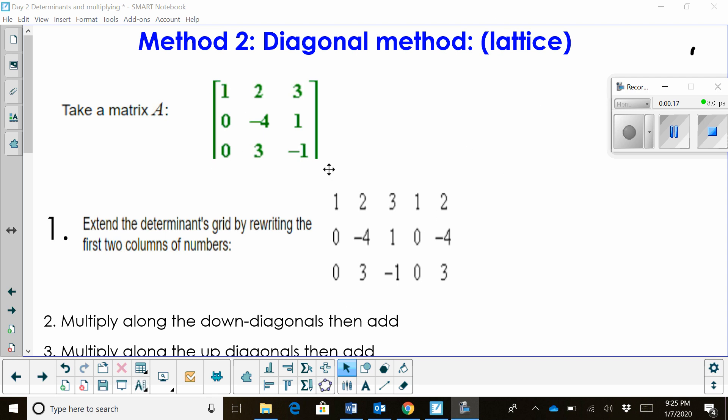We've got a 3x3 matrix with 9 entries. The first thing we're going to do is extend the matrix's grid by rewriting the first two columns at the end.